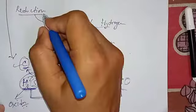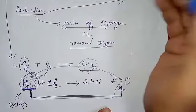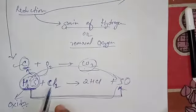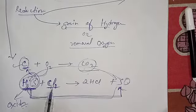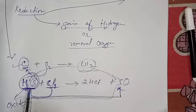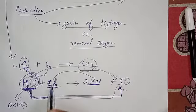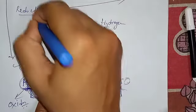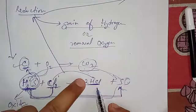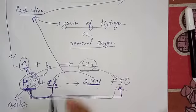Now let us look at reduction. Reduction is addition of hydrogen. In this same reaction, chlorine is gaining hydrogen to transform into HCl. So chlorine is gaining hydrogen — it is undergoing reduction. Chlorine is undergoing reduction because it is taking hydrogen from hydrogen sulfide. This is how reduction takes place.